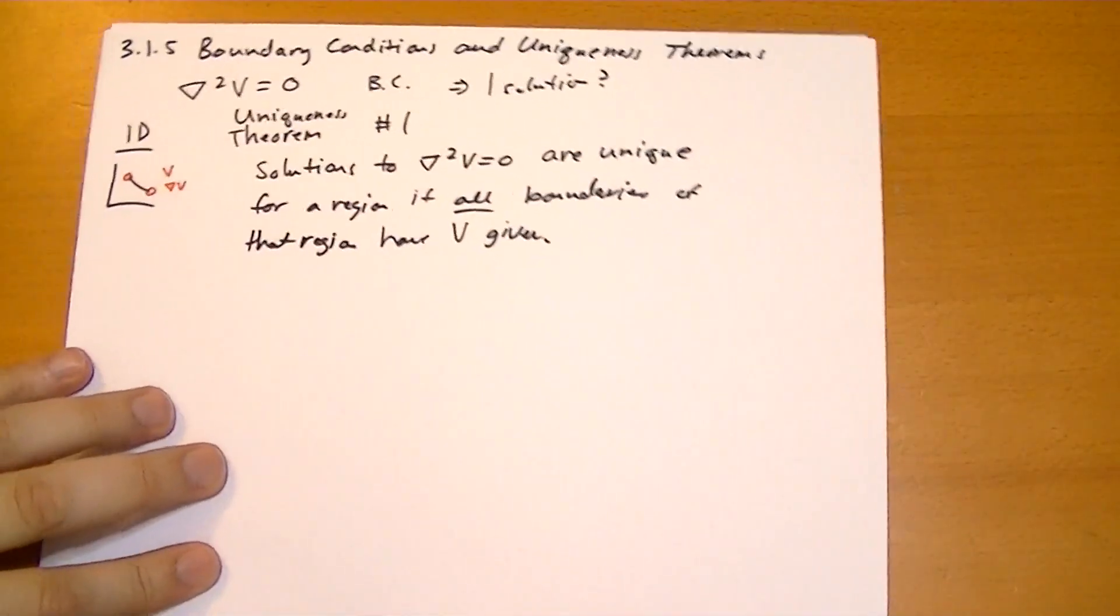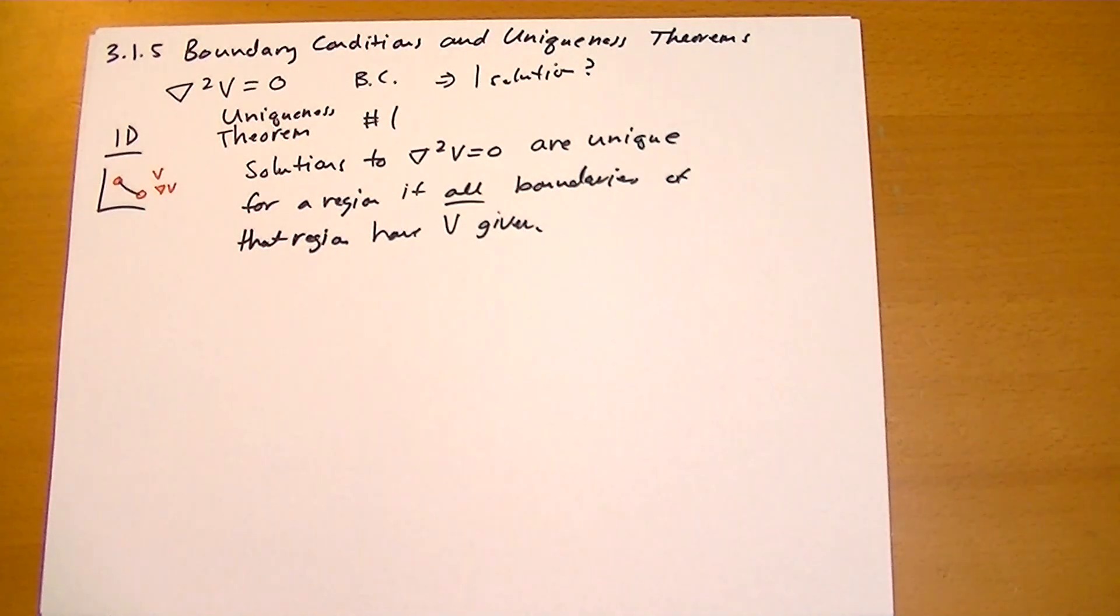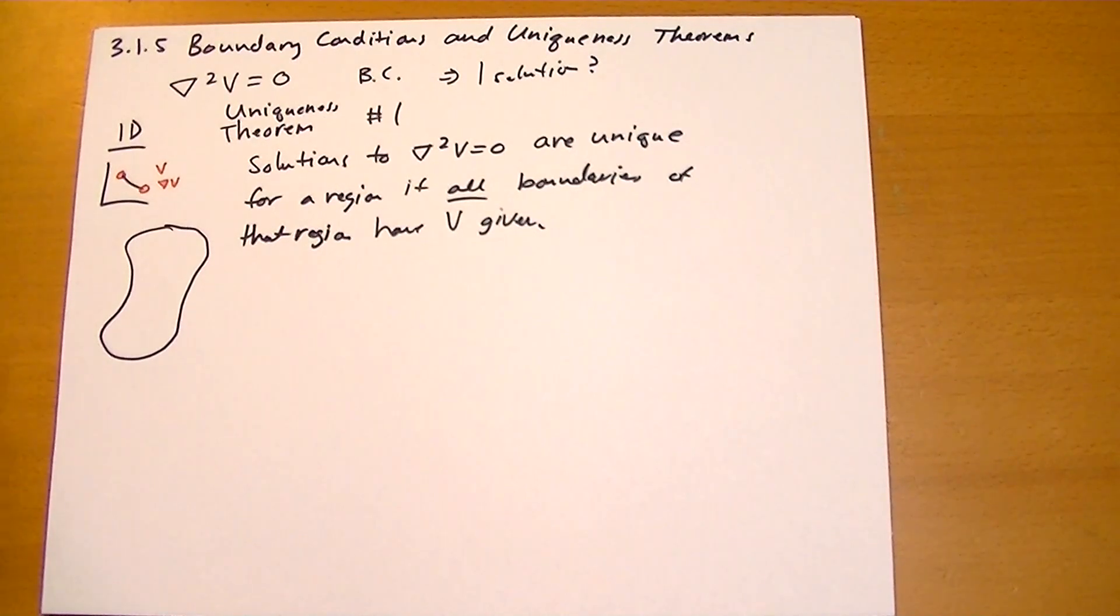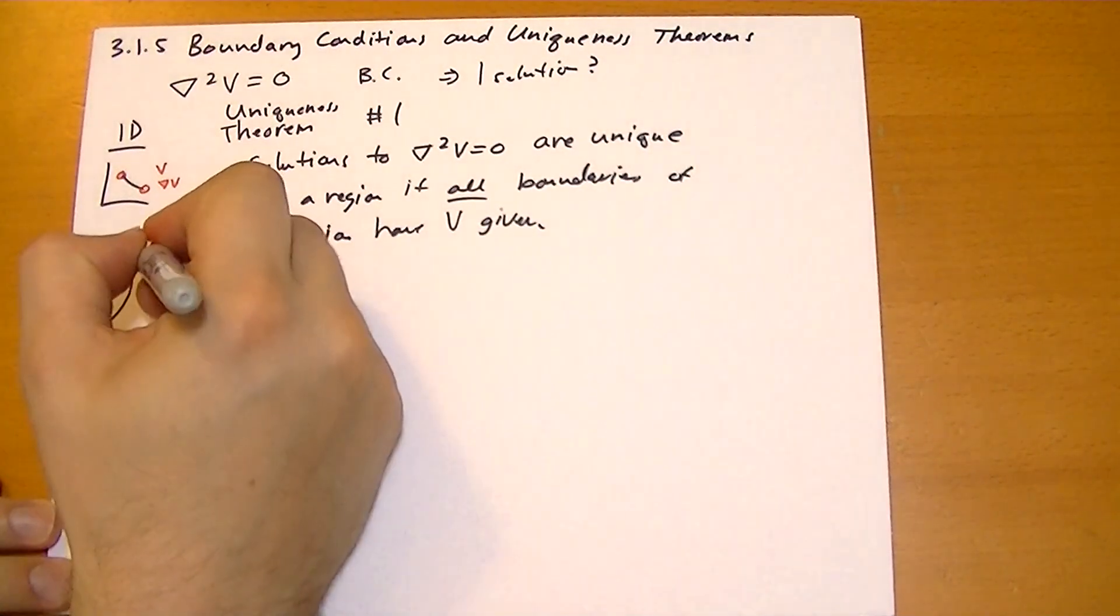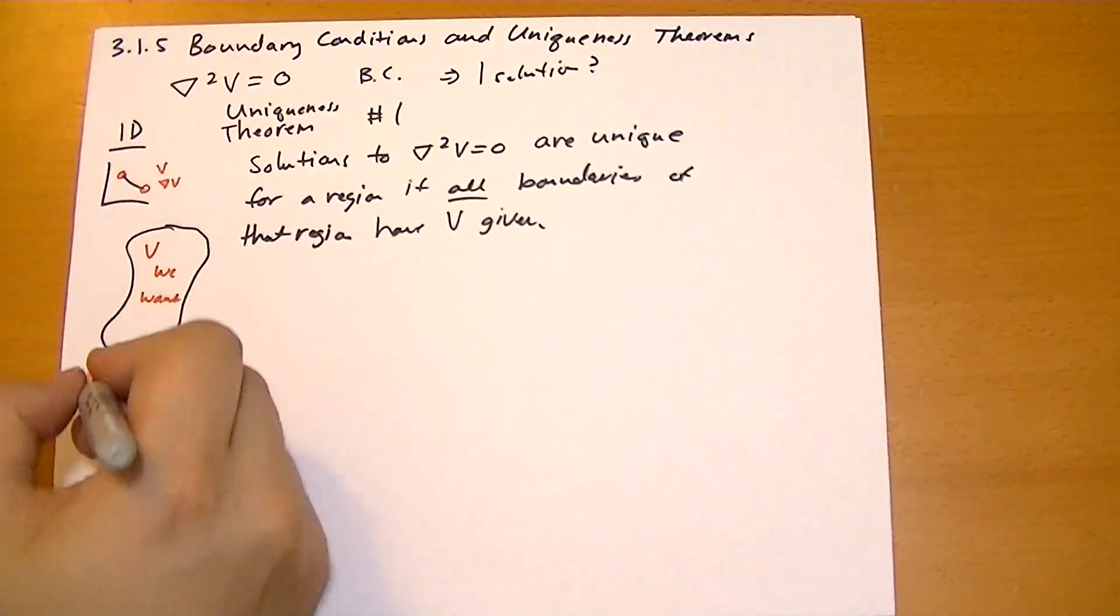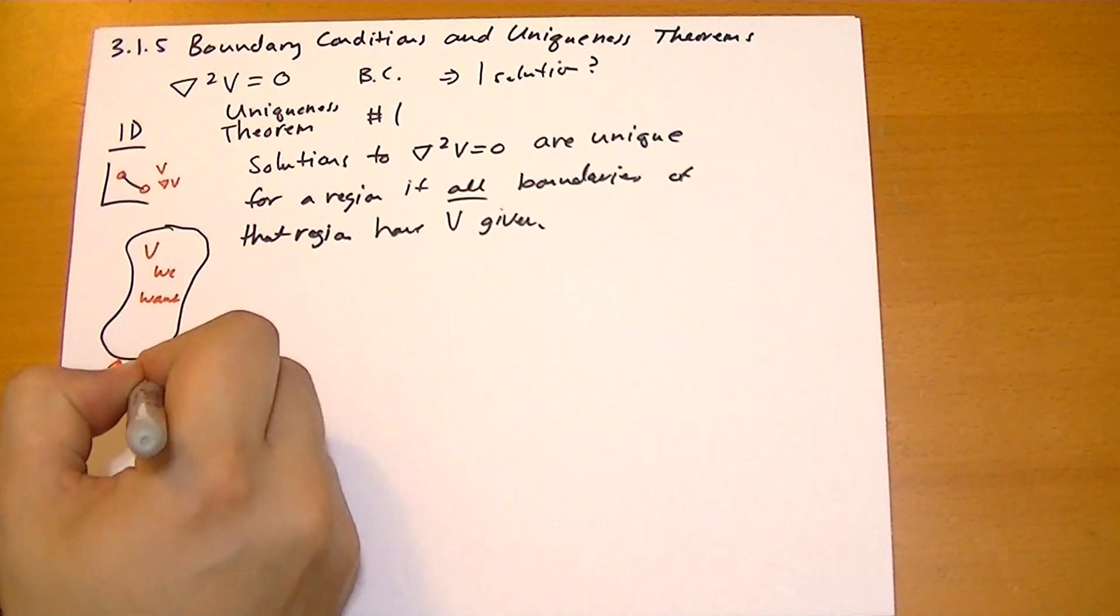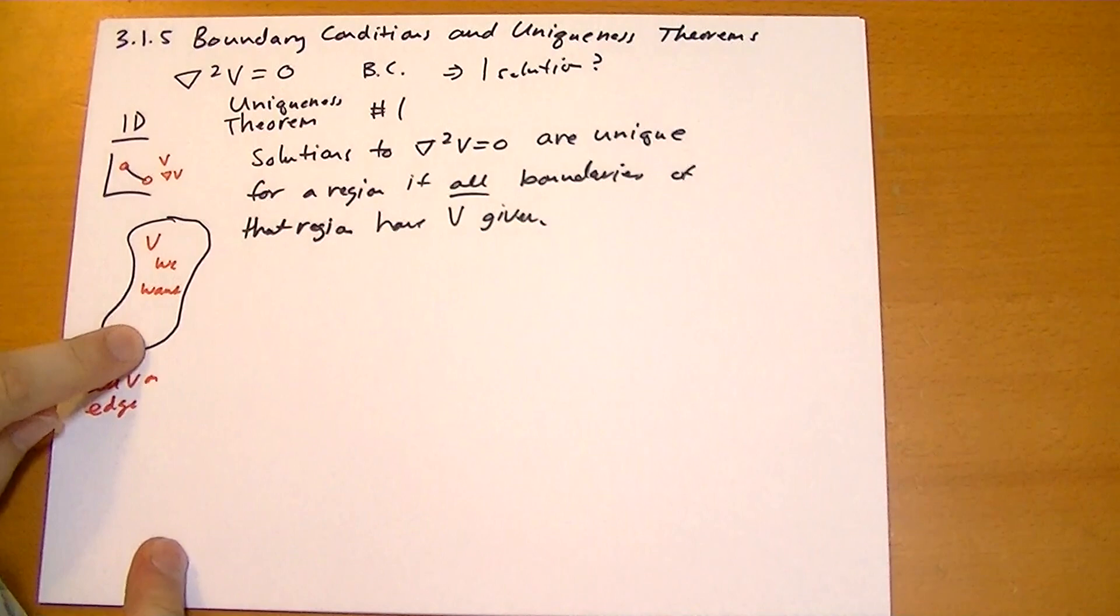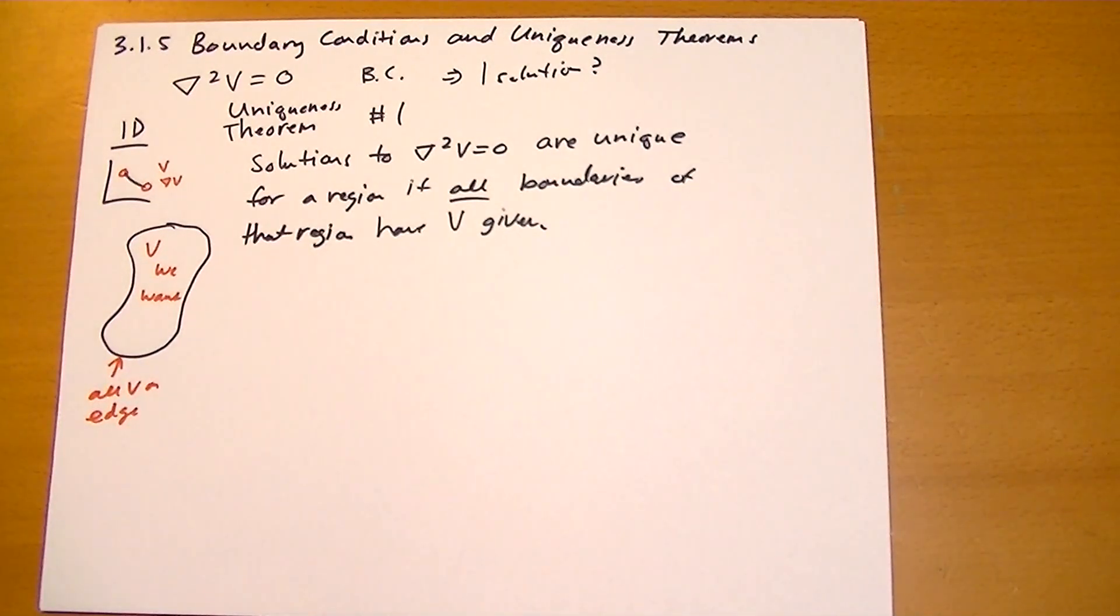If you tell me what's happening around a particular region, I can tell you there's exactly one solution inside that region for the potential. We have some randomly configured region, and as long as we're given V on all the edges, I can tell you what the potential would be inside of this region. I can't tell you outside, but I can tell you inside.